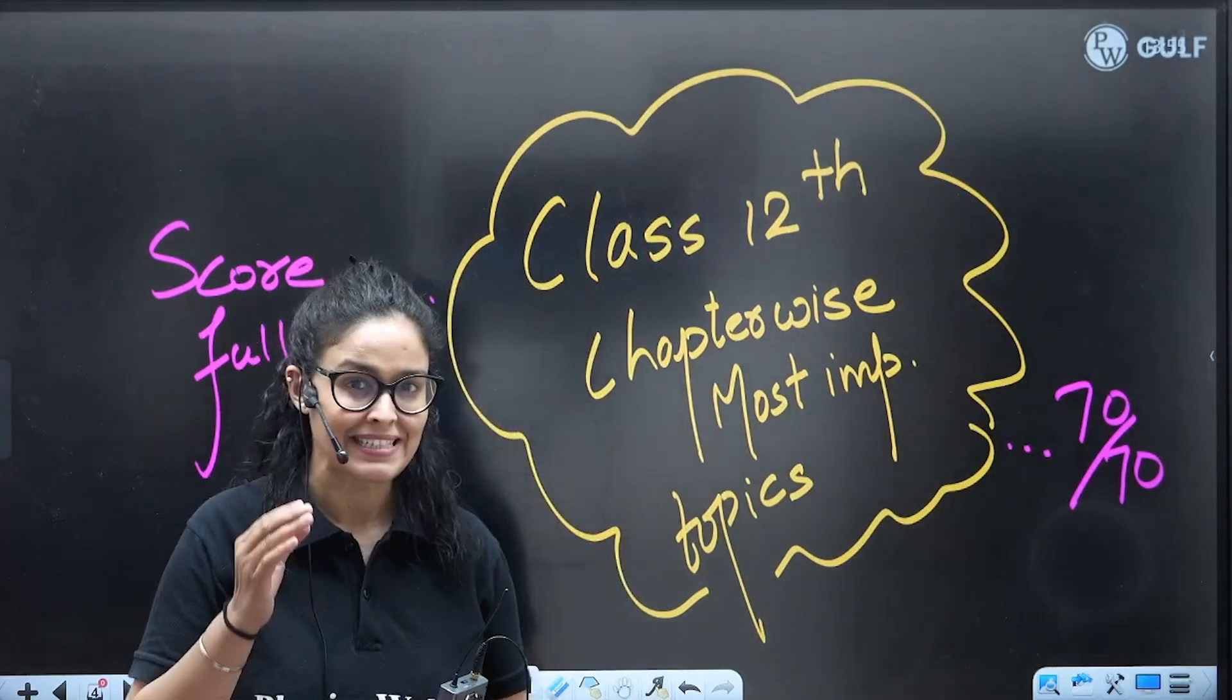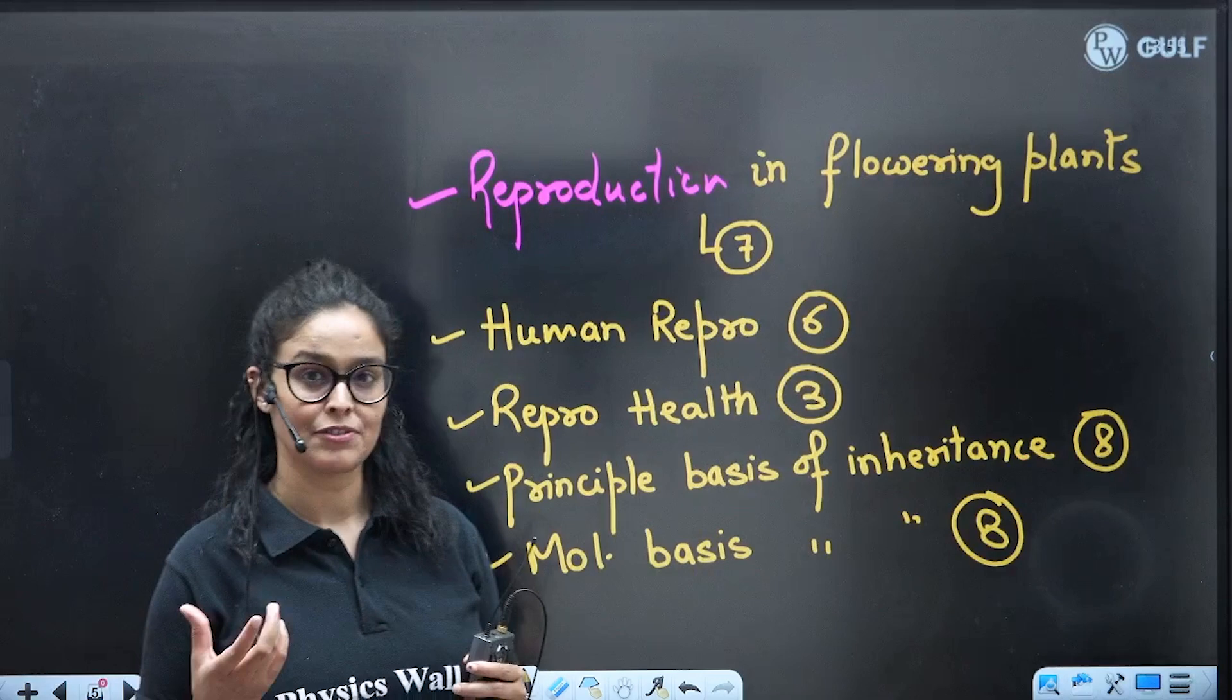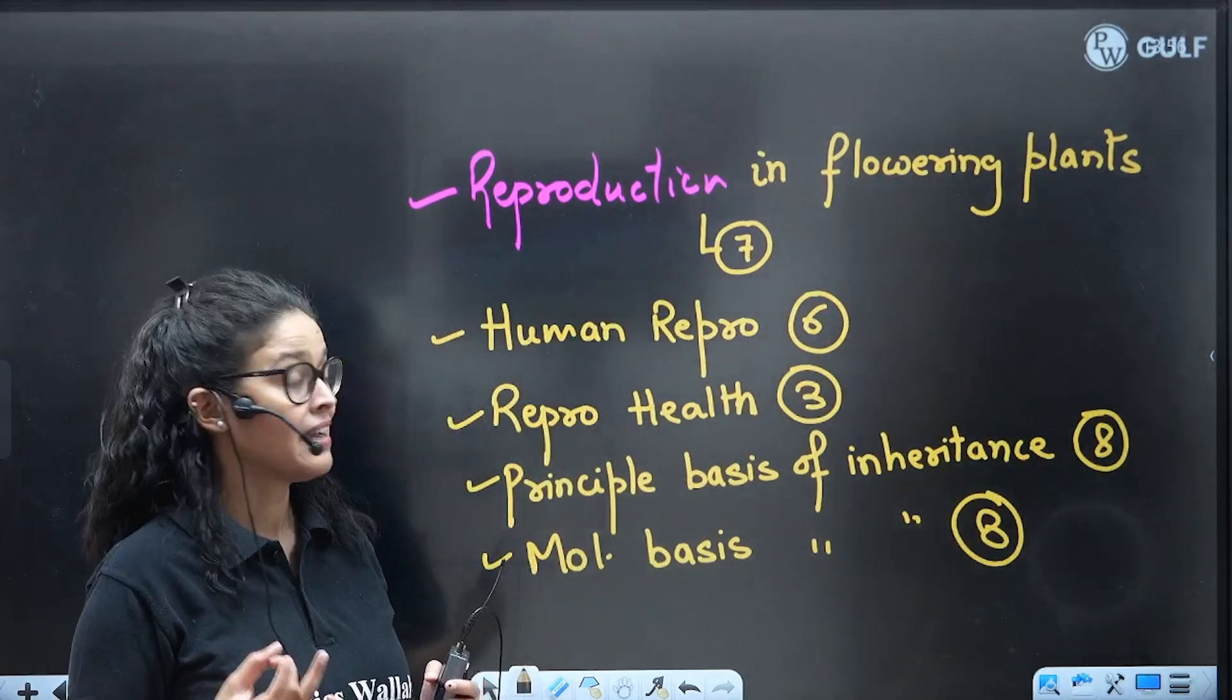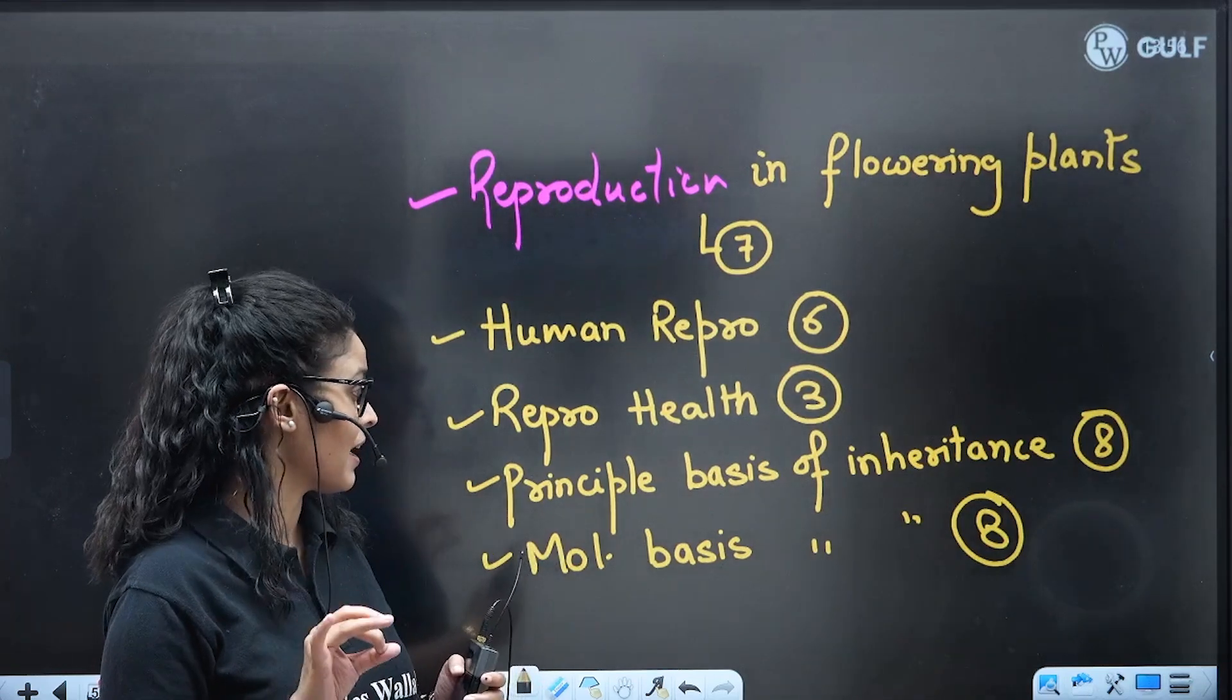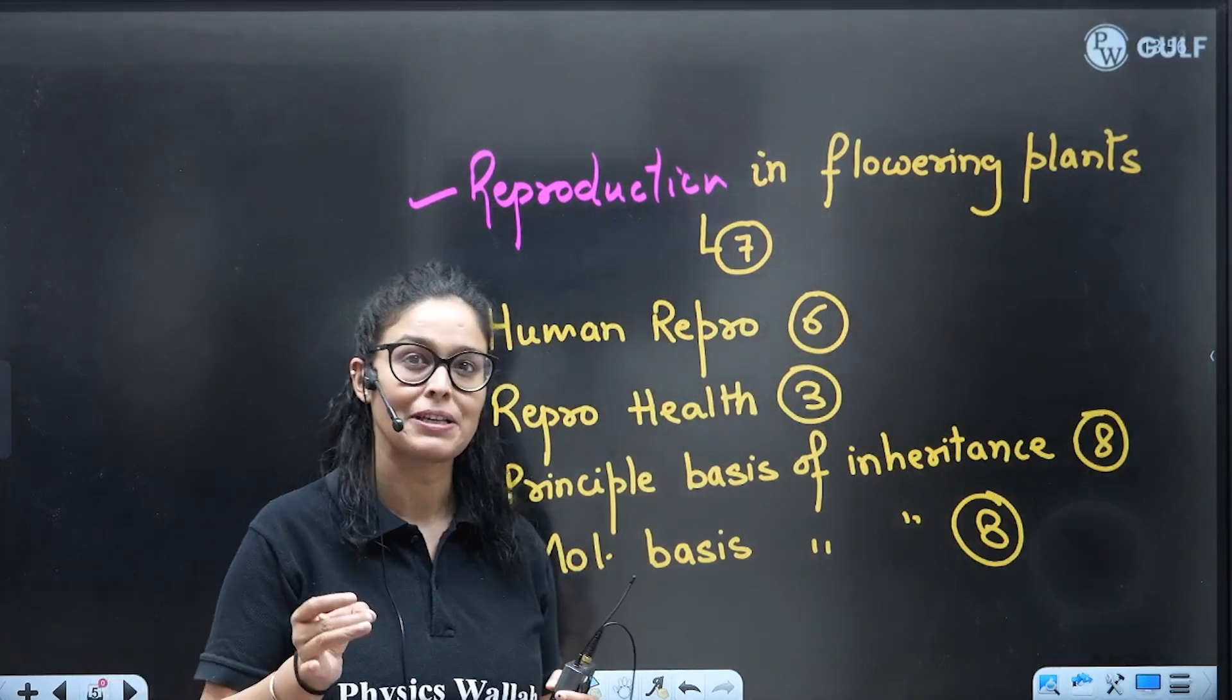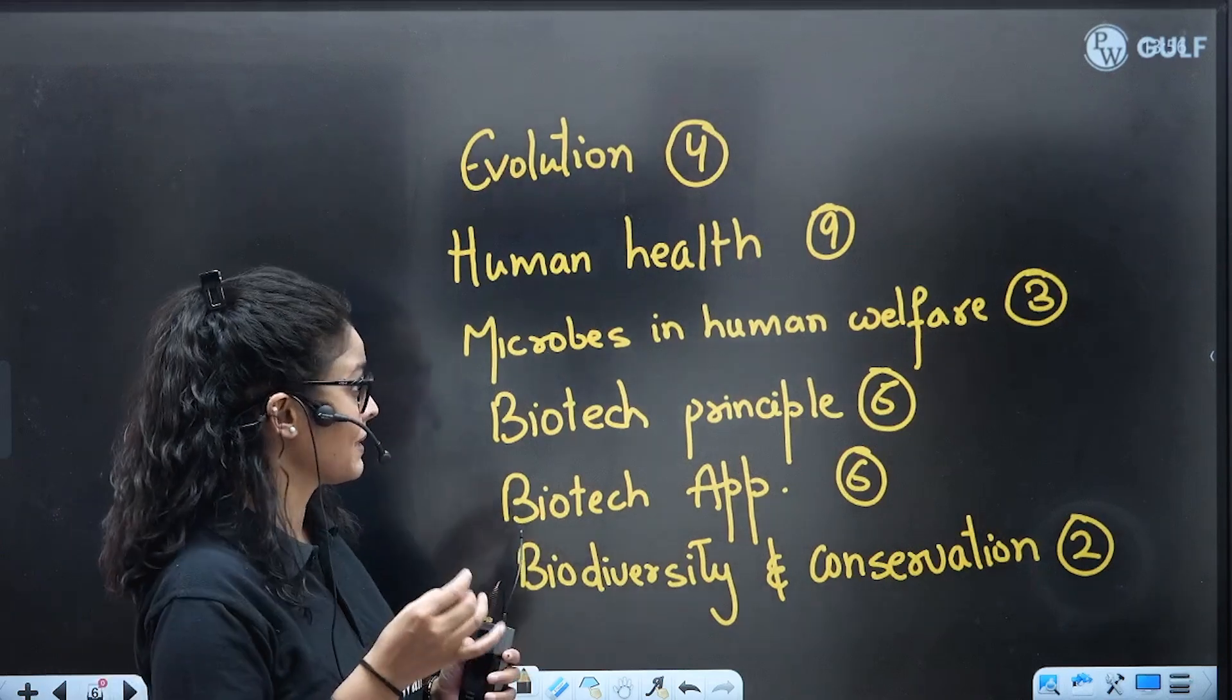Let's discuss everything about the chapter weightage. First chapter is Reproduction in Flowering Plants, total weightage is 7 marks. Human Reproduction 6 marks, Reproductive Health 3 marks, Principles of Inheritance 8 marks having very high weightage. Molecular Basis of Inheritance 8 marks having very high weightage. Evolution 4 marks, Human Health and Disease again very good weightage.